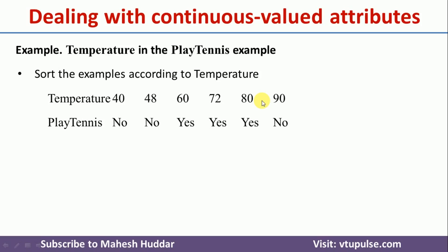Now the question is: how can we convert this continuous valued attribute into a discrete valued attribute? What we do in this case is, first we will try to identify the boundaries where there is a sudden change of class — that is, if you look at the target label.